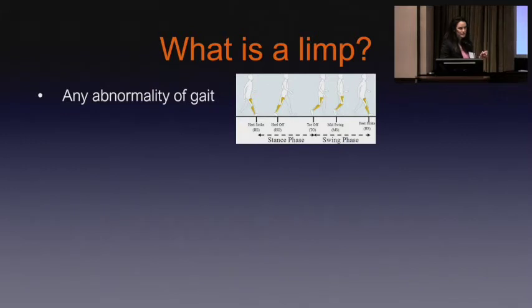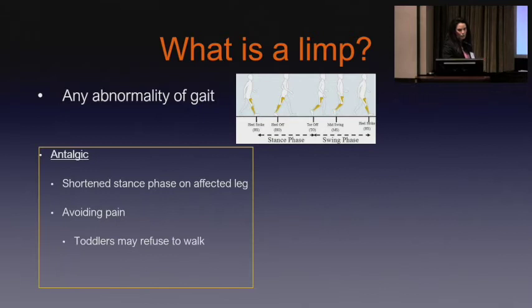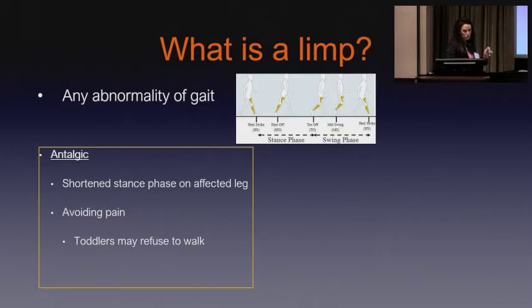Gait is divided into stance phase and swing phase. Stance phase is when your foot is actually on the ground; swing phase is when the foot's off the ground, and that's about a 60-40 split. When we're talking about a limp, I tend to think about it in two different ways. One is an antalgic gait, or a painful gait — that's a shortened stance phase on the affected leg, basically not wanting to put as much weight on that leg for as long a period of time. And that's to avoid pain.